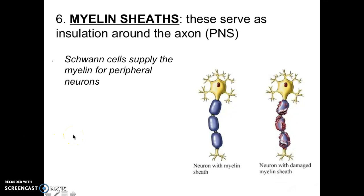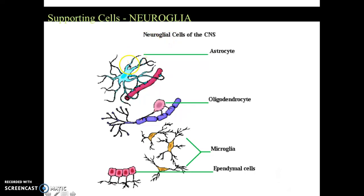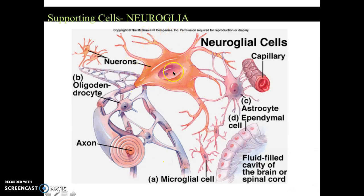Just to reiterate: the myelin sheath serves as insulation around your axon. Astrocytes connect to your blood vessel; oligodendrocytes connect to the myelin sheath because they're producing it; microglial cells digest bacteria and protect; ependymal cells line the cavity of the brain and help the cerebral spinal fluid move around. Find your neuron first and then look around — find your capillaries for the astrocyte, the oligodendrocytes connected to myelin sheath, and microglial with that spiny appearance.